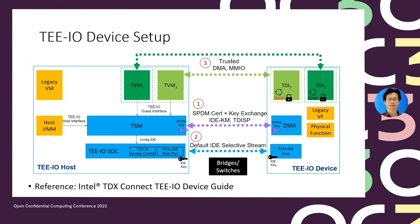Finally, this is a typical flow for TDI device setup. First, the host sends SPDM messages to establish a secure SPDM session and collect the device certificate and measurement information. Then the host uses IDE key management to set up the IDE key for the device to support link encryption. Later, the TVM verifies the device and accepts the TDI assignment by sending a start device interface message.